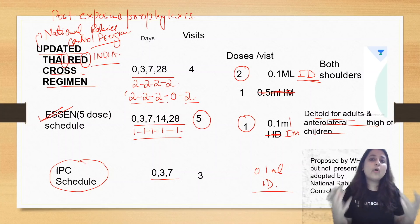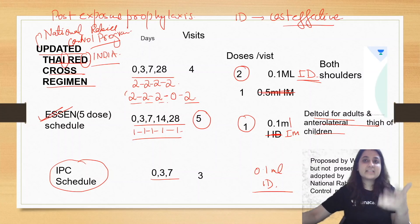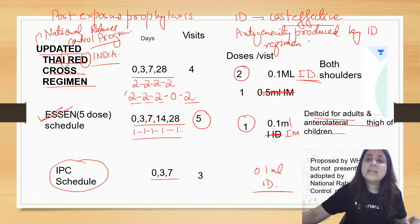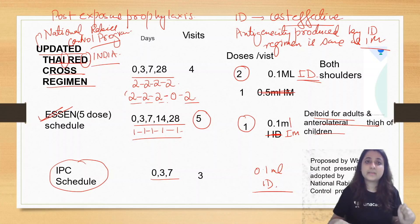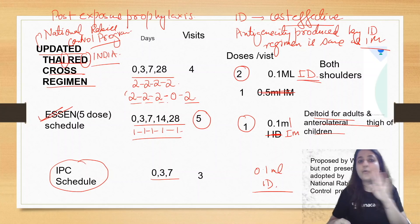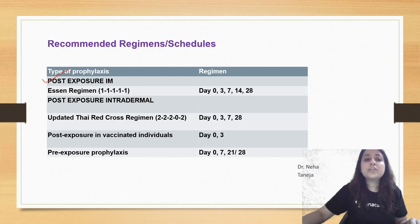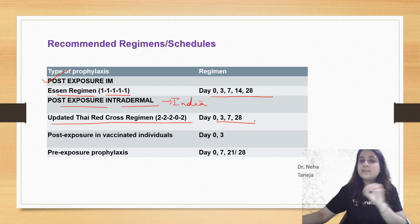Why are we opting for the intradermal regimen? The intradermal regimen is more cost-effective — with one vial you can vaccinate more people. Research has shown that antigenicity produced by the intradermal regimen is the same as intramuscular. So according to the program, to make it cost-effective, we opt for intradermal. Remember: days 0, 3, 7, 28 — two doses on two sides; the 14th day is missed in the intradermal regimen. Intramuscular Essen regimen: days 0, 3, 7, 14, 28.